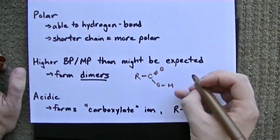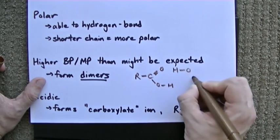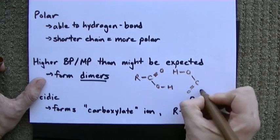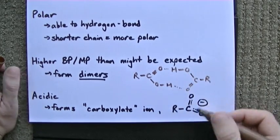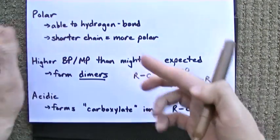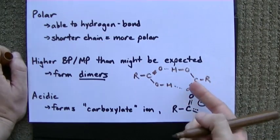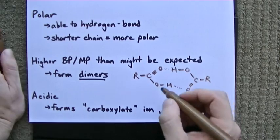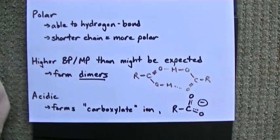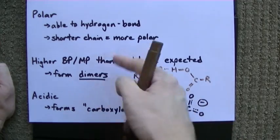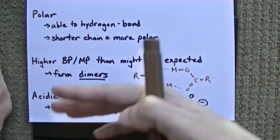So here is one carboxylic acid. Here is another carboxylic acid. And they end up hydrogen bonding together in a pair to become one. It's beautiful. And so that means that the molecular mass of this molecule is actually double what you'd expect, and that means the boiling and melting points are even higher.